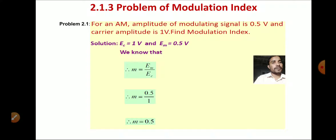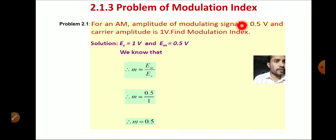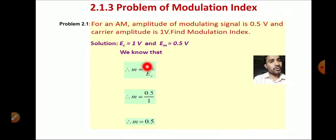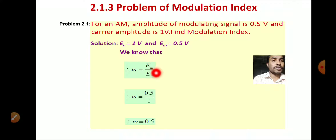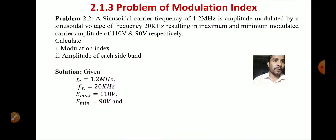Problem 1: For an AM signal, the amplitude of the message signal is 0.5 volt and the carrier signal amplitude is 1 volt. Find the modulation index. We know modulation index m = E_m / E_c. Here E_c = 1 volt and E_m = 0.5 volt. Therefore, m = 0.5 / 1 = 0.5. So the modulation index is 0.5.